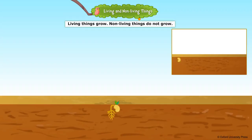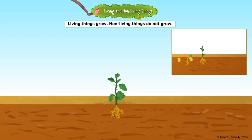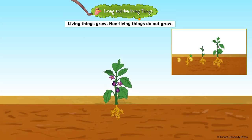Living things grow. Babies grow into adults. Small plants grow into big trees and so on. But non-living things do not grow.